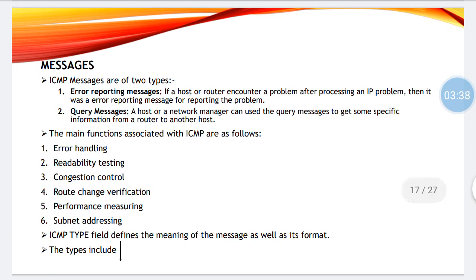ICMP messages are of two types: error reporting messages and query messages. Error reporting messages are used for error reporting, and query messages are used for query purposes. The main functions of ICMP include: it handles errors, it tests reachability, and it controls congestion — in the sense that if the sender is sending too many packets that the receiver is not able to handle, then congestion control has to be done, and that is served by ICMP.